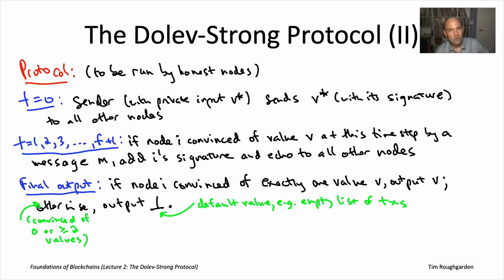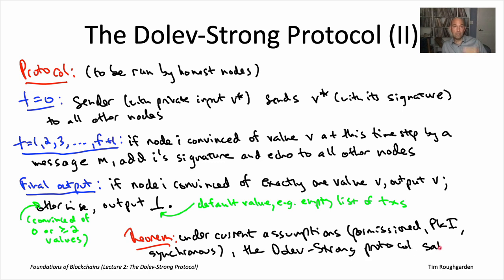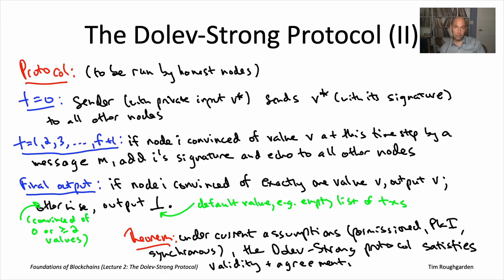Don't let the short length of this protocol description fool you — it's a very clever protocol, and you'll particularly appreciate that when we prove its properties in the next video. The Dolev-Strong protocol, under our assumptions of permissioned PKI and the synchronous model, satisfies both validity and agreement. It also obviously satisfies termination — it's guaranteed to stop after the last time step, time step f plus one. So Dolev-Strong is a solution to Byzantine broadcast with Byzantine faults, as long as you're in the synchronous permissioned setting with public key infrastructure. In the next video we'll go through the proofs — they're clever, short, and sweet.